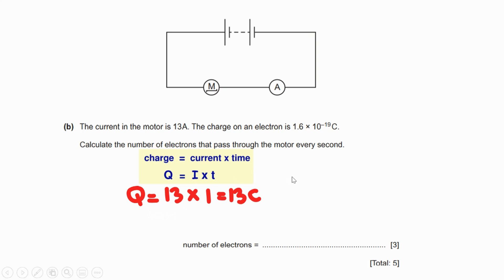Now I can get n, the number of charges, by dividing Q by e. Q is the electrical quantity just calculated from the previous step, that was 13 coulombs. 13 divided by the value of the charge of an electron, 1.6 × 10^-19, using a calculator.